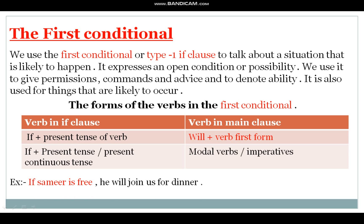For example: 'If Samir is free, he will join us for dinner.' In this sentence, 'is' is used in the if clause — that is present tense of the verb — and in the main clause, 'will join' is used, which is will plus verb first form. So this is an example of a first conditional sentence.